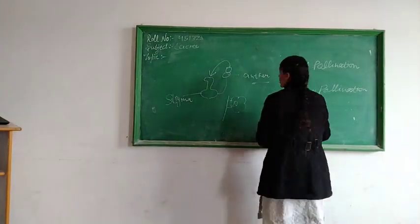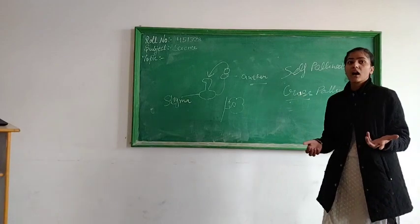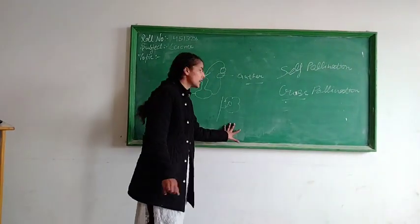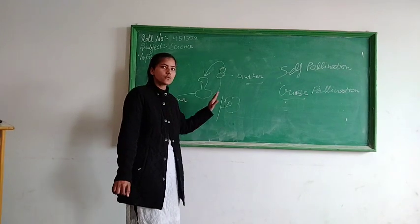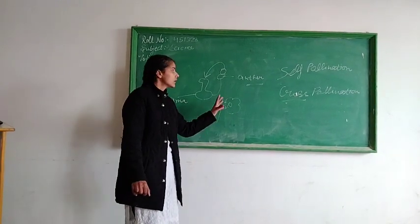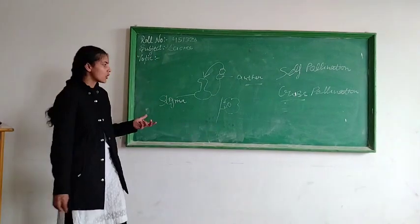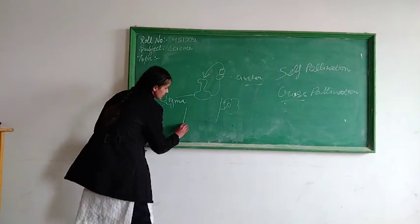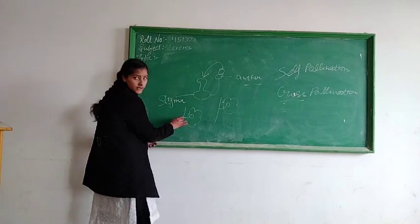Cross-pollination happens when pollen grains are transferred from one plant to another. Cross-pollination means this is one plant and this is another plant — a different plant.